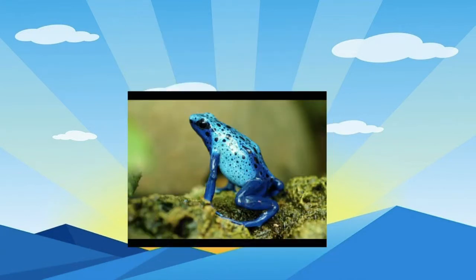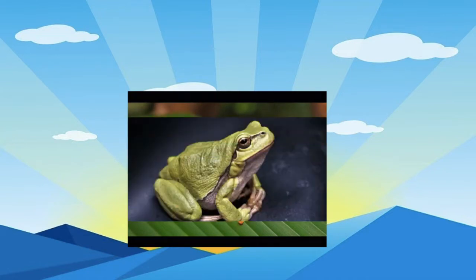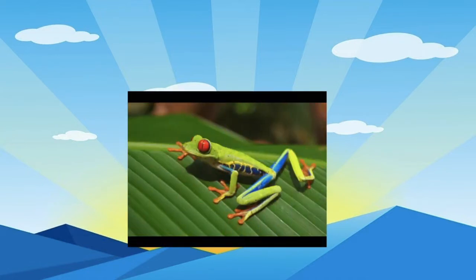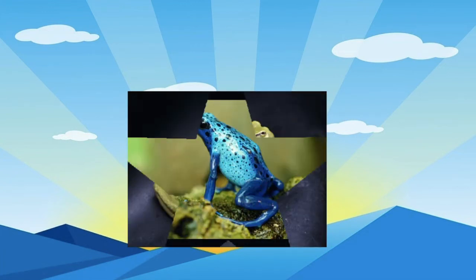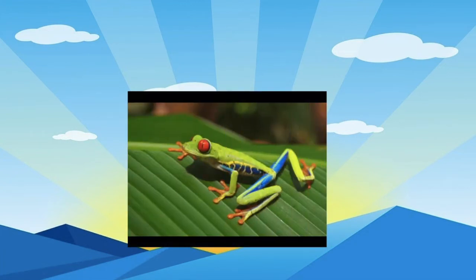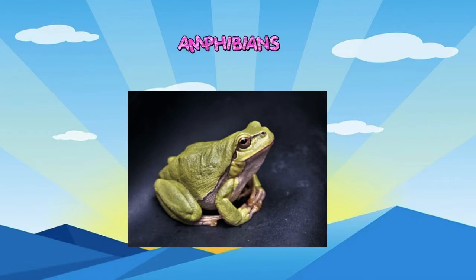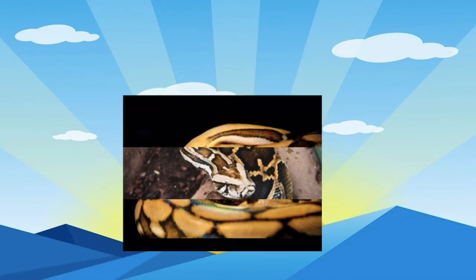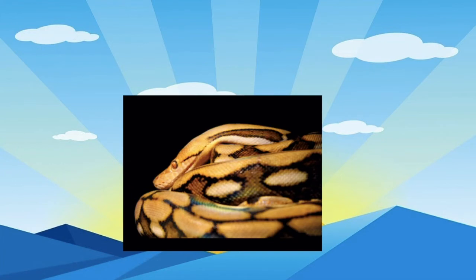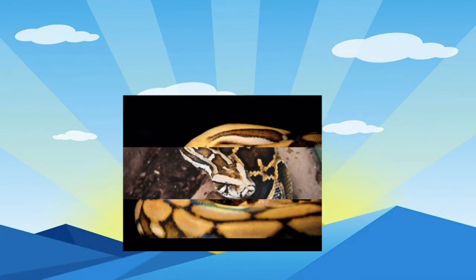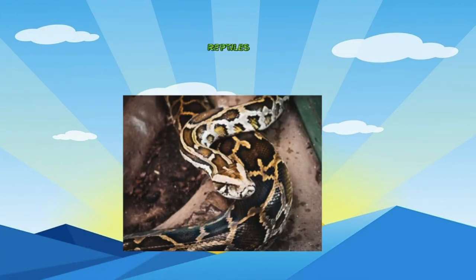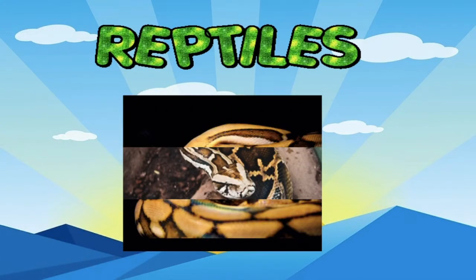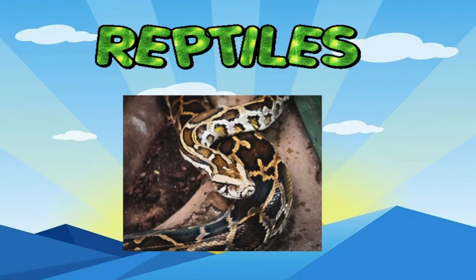Next is a frog. Fun fact: we call the group of frogs an army. The frog is an amphibian. Lastly, we have none other than the reticulated python — it's a reptile. In fact, this is the longest reptile in the world. You did a great job, learners.